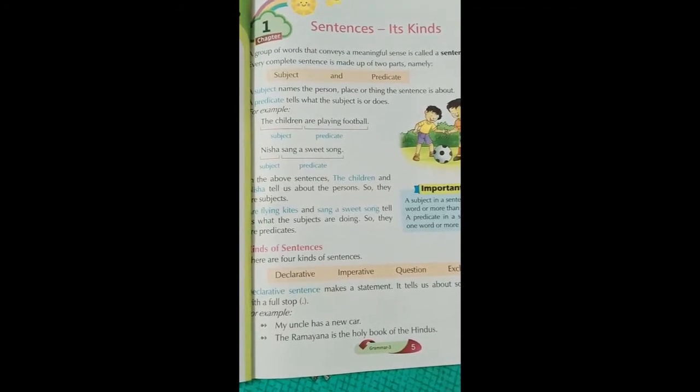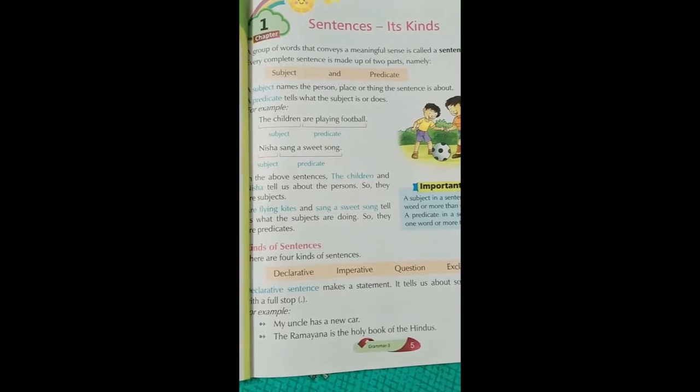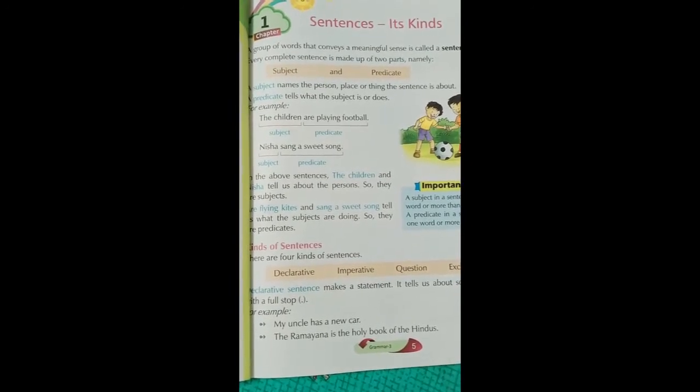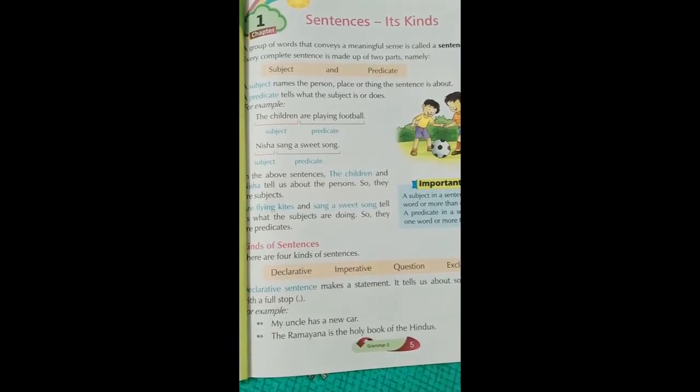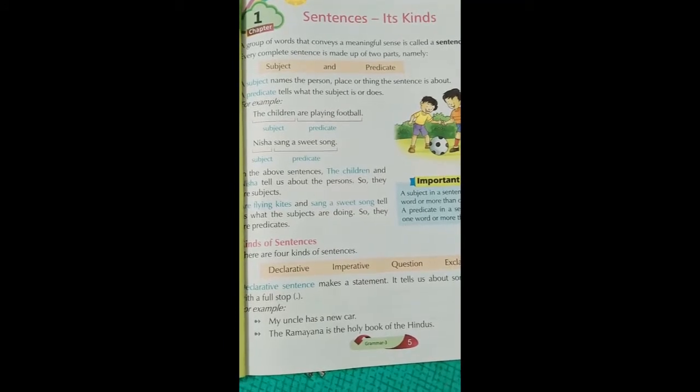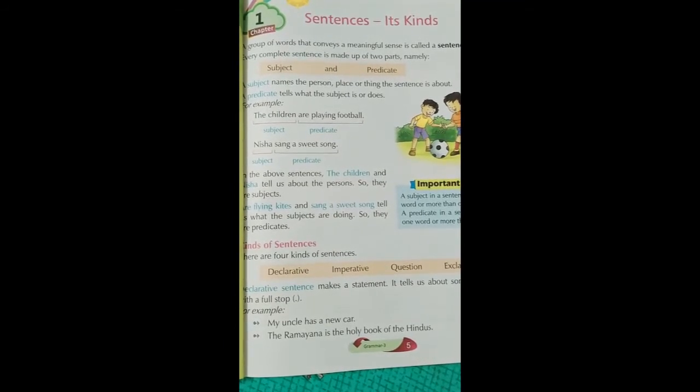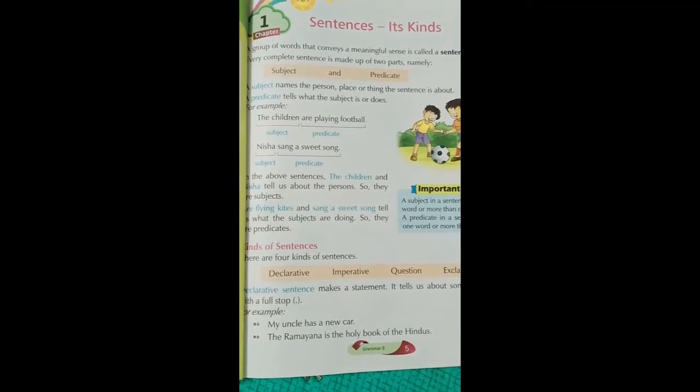The children are playing football. This is a complete sentence. The children is a subject and are playing football is a predicate. Playing is an activity, what the subject is doing.